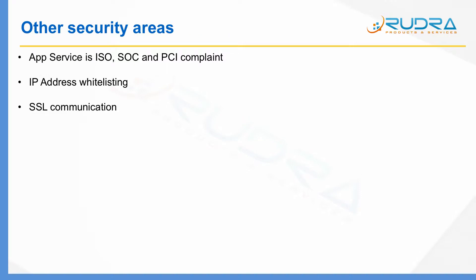There are other security areas to be aware of with respect to App Service. App Service is ISO, SOC, and PCI compliant. If you are processing credit card information, the underlying environment is PCI compliant, though you still need to achieve PCI compliance from the application layer perspective. You can also whitelist trusted IP addresses within the Azure portal to limit access to your App Service, and you can enable SSL communication to encrypt data in transit.